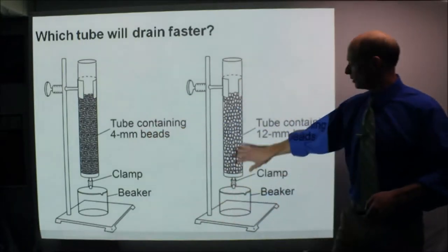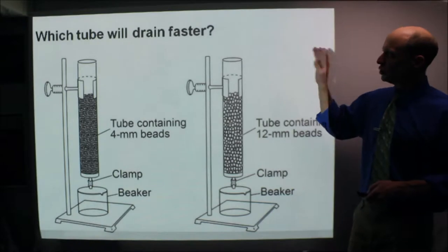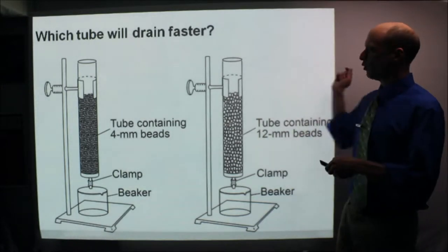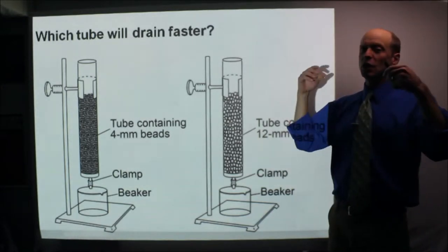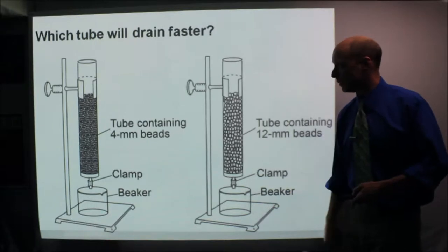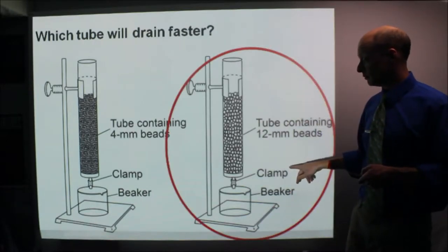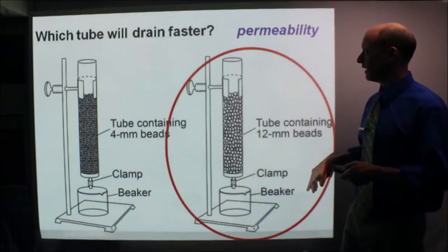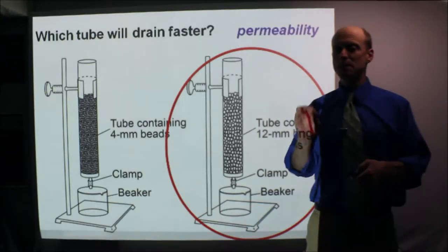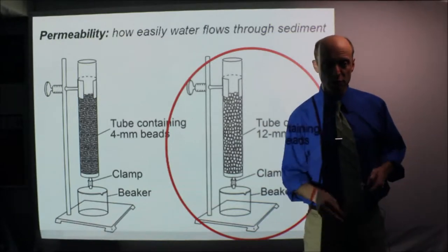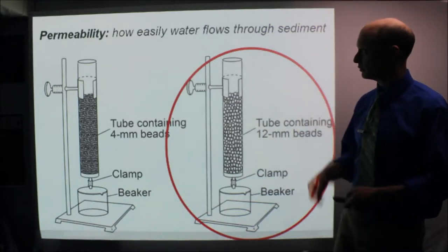So first I have these two here: smaller beads, larger beads. Which two will drain faster if you pour the same amount of water into each? Which would drain out the fastest into the bottom? The answer is going to be this one. The larger one will drain faster. This is measuring permeability. Permeability is water flowing through sediment, how easily water flows through sediment.